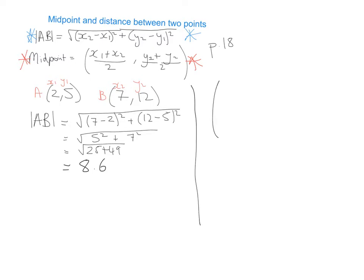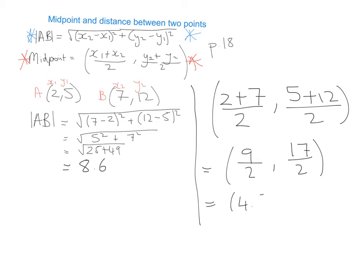So we're going to fill it in. So it's (x1 + x2)/2, (y1 + y2)/2, so that's (2 + 7)/2, (5 + 12)/2. So that's going to give me 9/2 and 17/2, and that's going to give me 4.5 and 8.5. So that's our x,y coordinate for the middle of those two points is (4.5, 8.5).